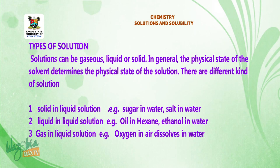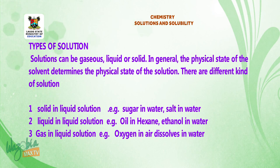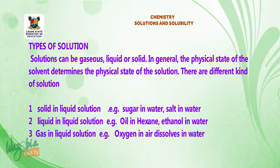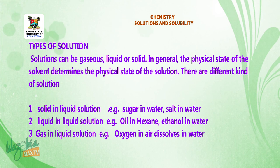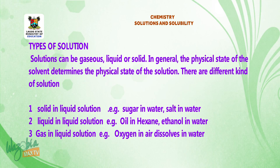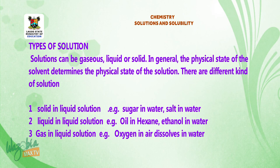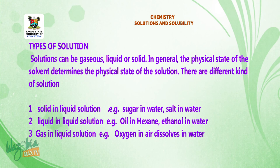Types of solutions. Solutions can be gaseous, liquid, or solid. In general, the physical state of the solvent determines the physical state of the solution. There are different kinds of solutions: 1. Solid in liquid solution, e.g., sugar in water, salt in water. 2. Liquid in liquid solution, e.g., oil in benzene or ethanol in water. 3. Gas in liquid solution, e.g., oxygen dissolved in water.